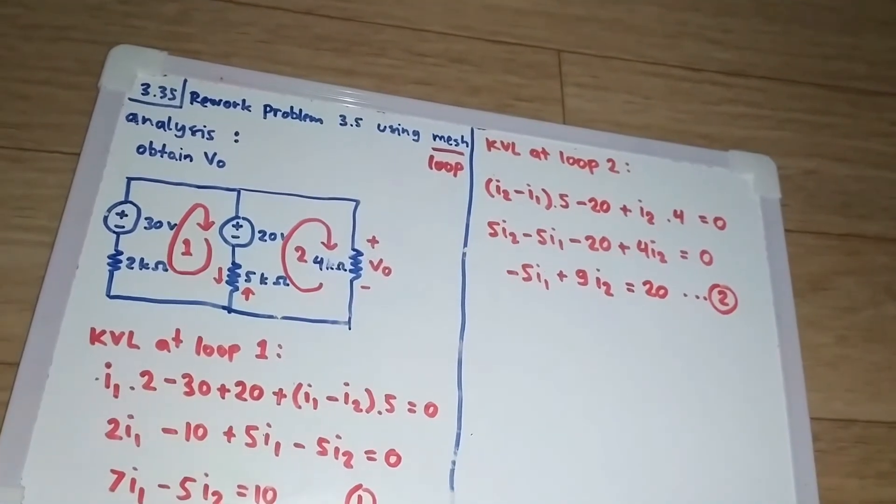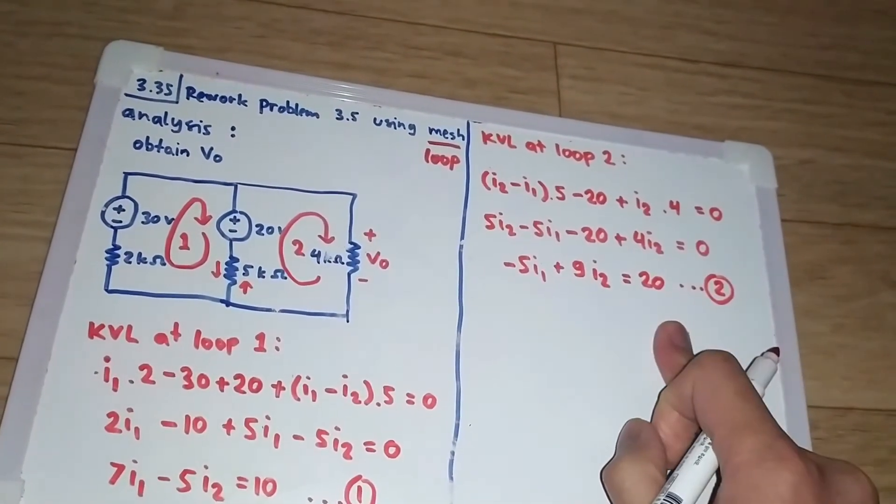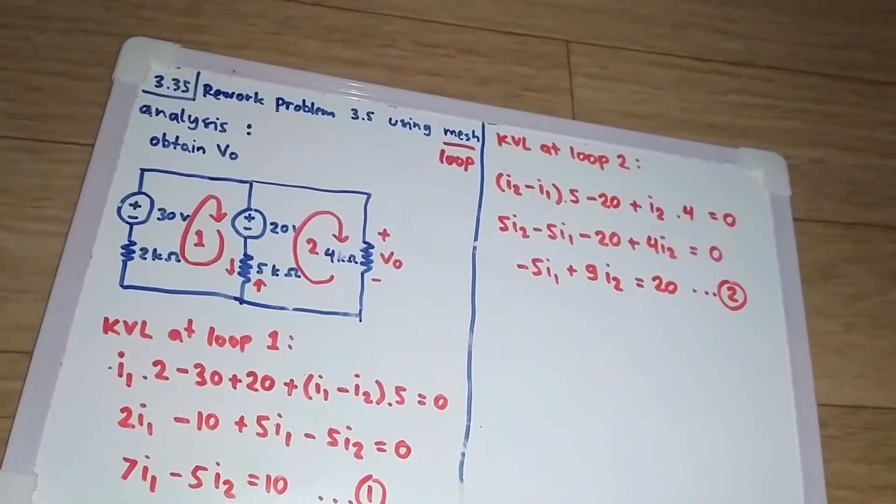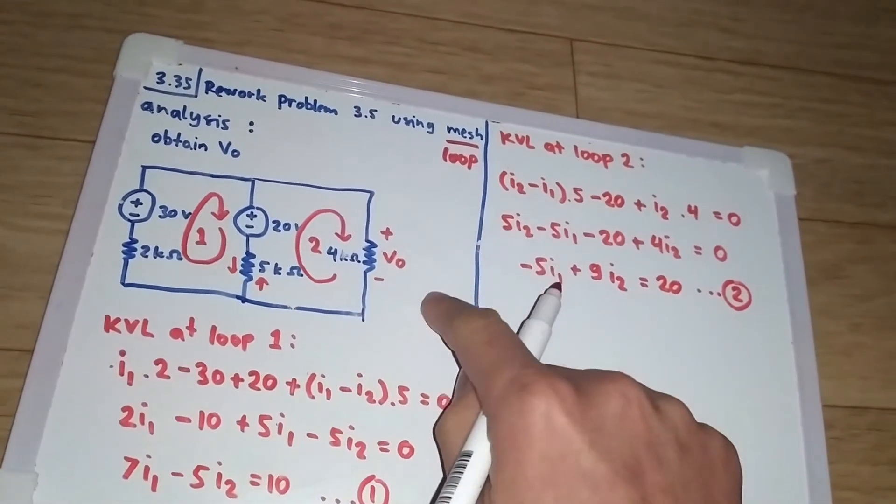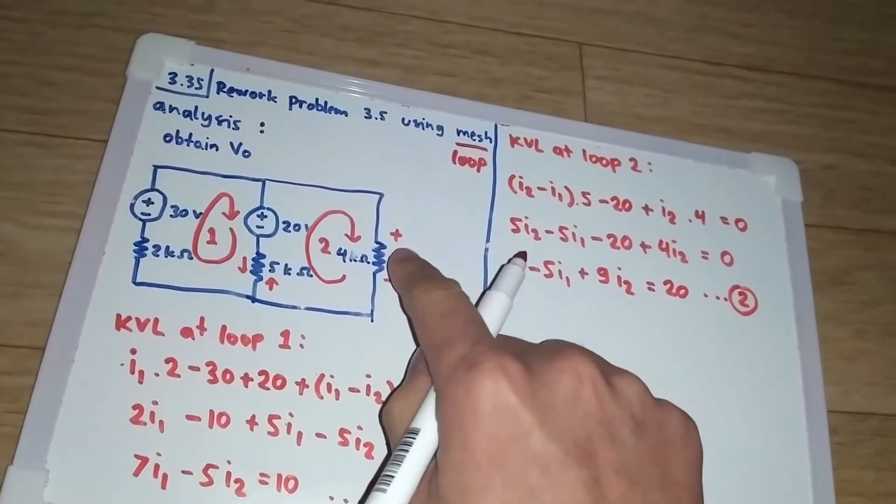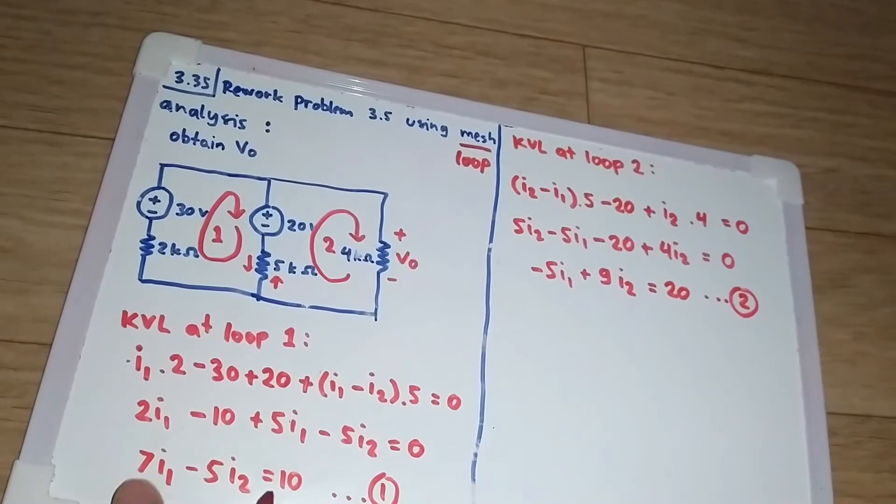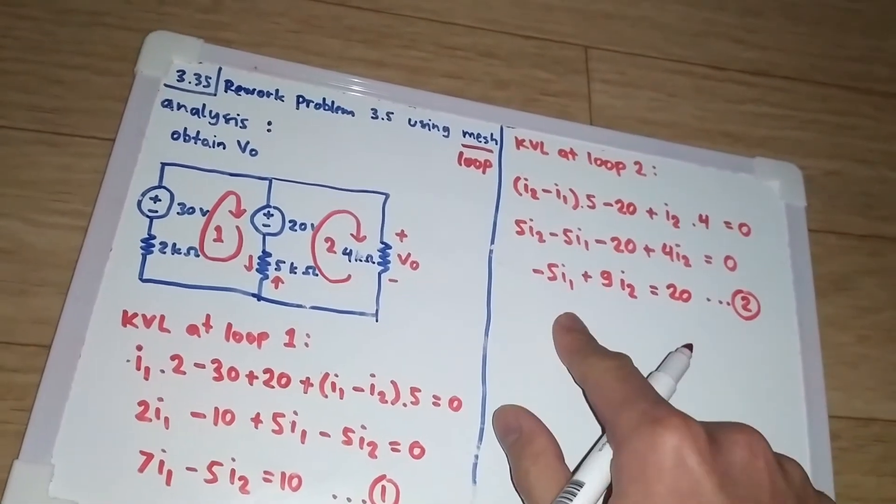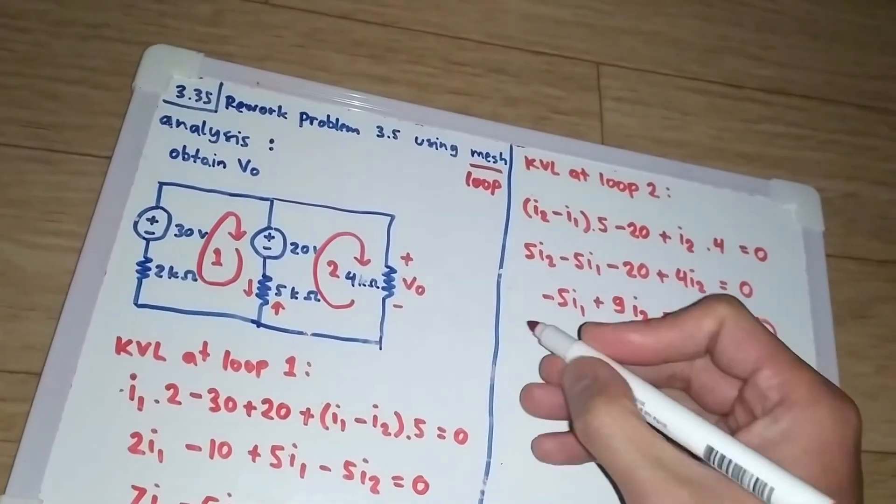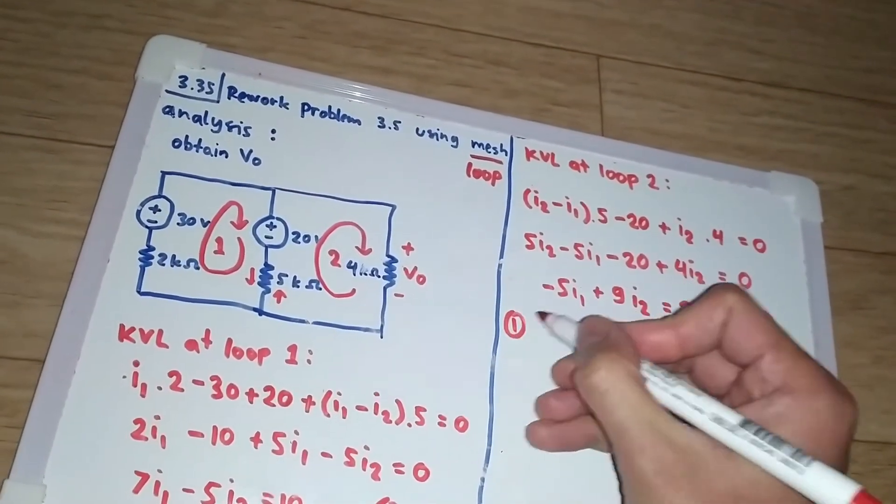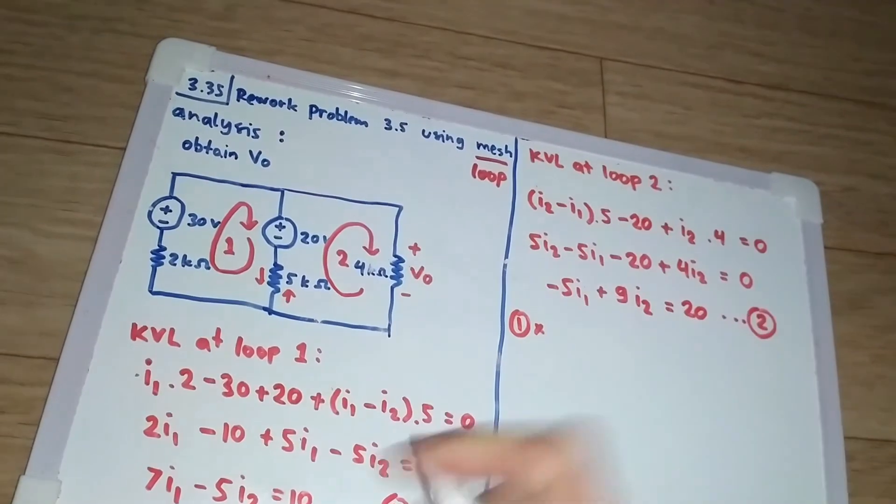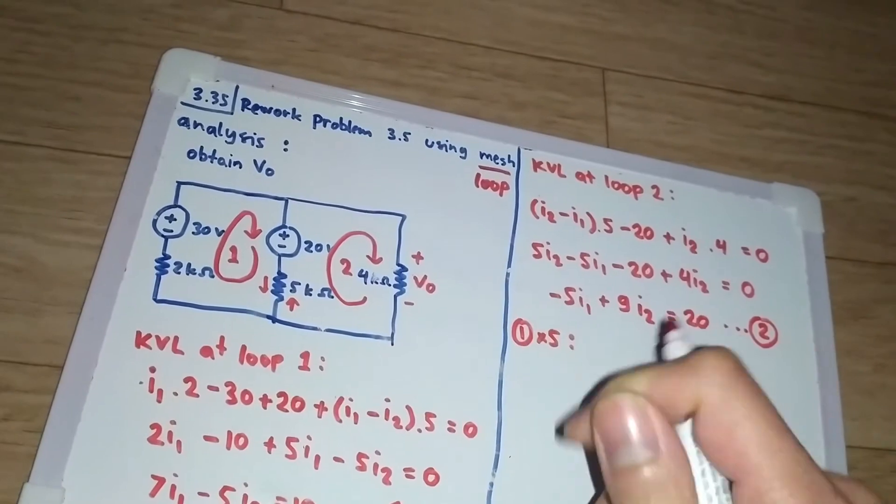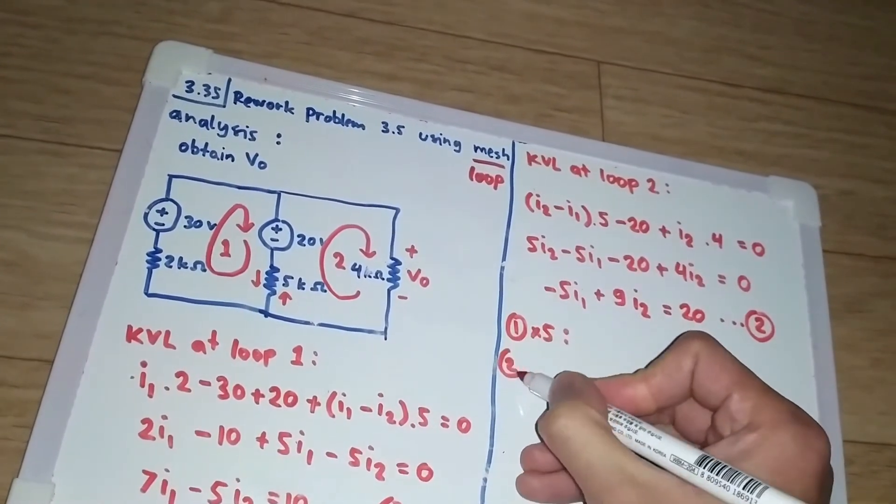Now we have this equation and this equation, so we need to solve for I1 and I2. But I2 is more important, so I need to eliminate the I1. I1 coefficient is 7 here and this one is minus 5, so I will multiply this one by 5 and I will multiply the second one by 7.